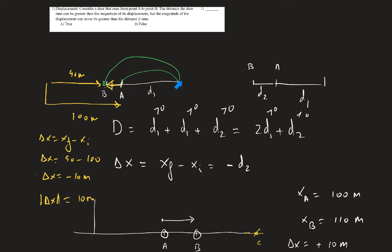The animal can walk from A to any point, say x equals 200, traveling 100 meters on the first trip, another 100 meters on the second trip, then 10 more meters. The total distance is 210 meters, but the magnitude of displacement is only 10 meters. The distance traveled is always bigger than or equal to the displacement magnitude — never less.